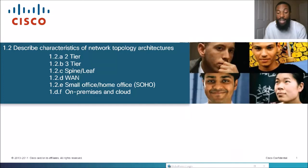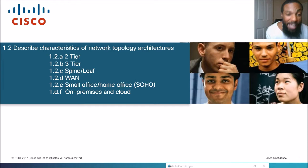You are now tuned in to The Network, the YouTube channel that takes complex networking topics and dumbs them down to simpler language. Today's topic covers a whole bunch of them: two-tier, three-tier, spine and leaf, small office home office (SOHO), on-premises, and cloud — these are characteristics of network topology architectures.